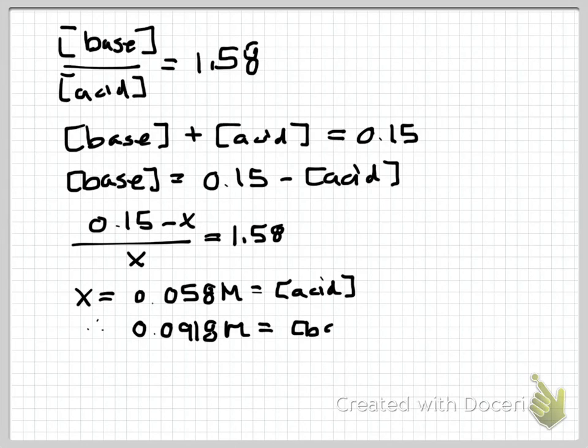Therefore, my base concentration is equal to 0.0918 molar. And it's always a good idea to check your algebra to make sure that makes sense by putting it back into our original ratio. And when I put my base number over my acid, I do indeed get 1.58. So the algebra was correct.